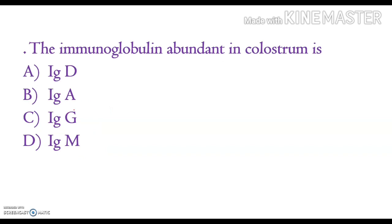The next question: which immunoglobulin is found in colostrum? Colostrum is slightly yellow in color and it is rich in IgA immunoglobulin.